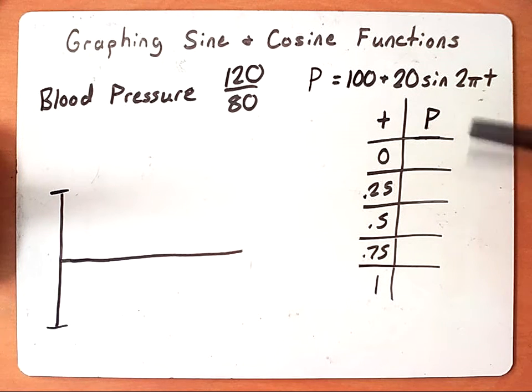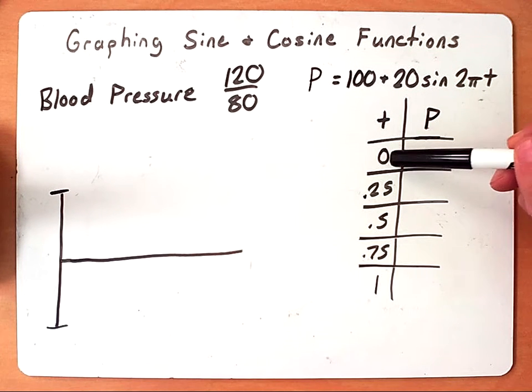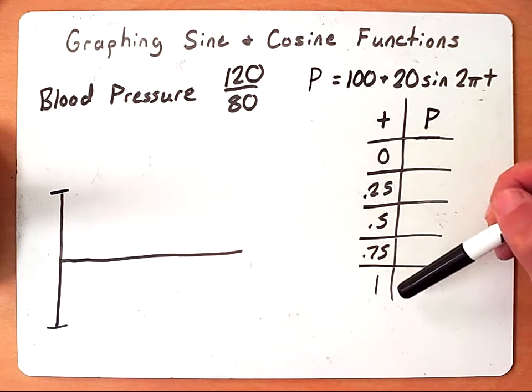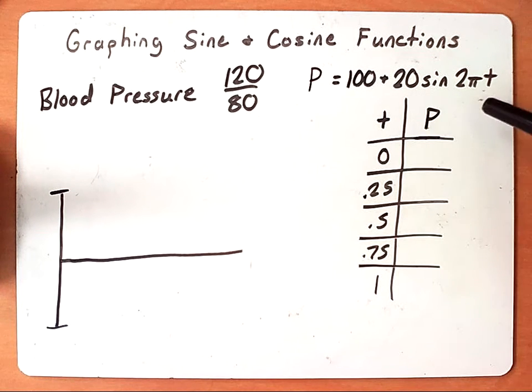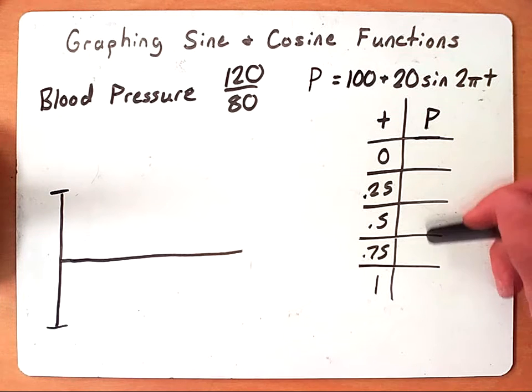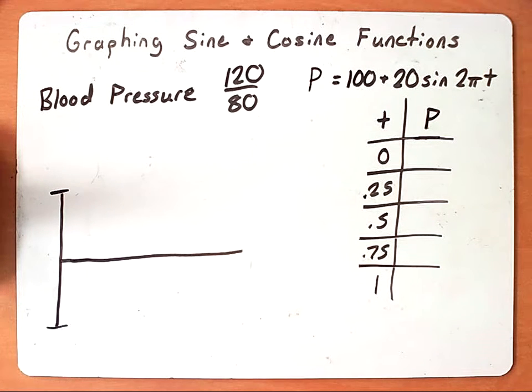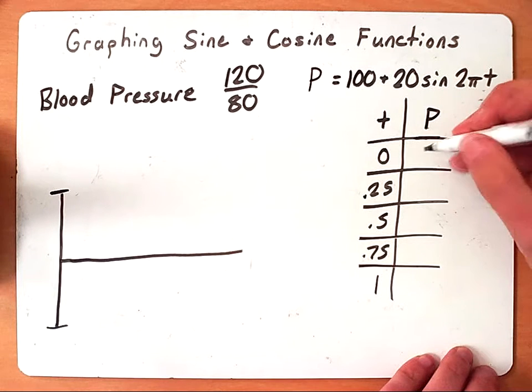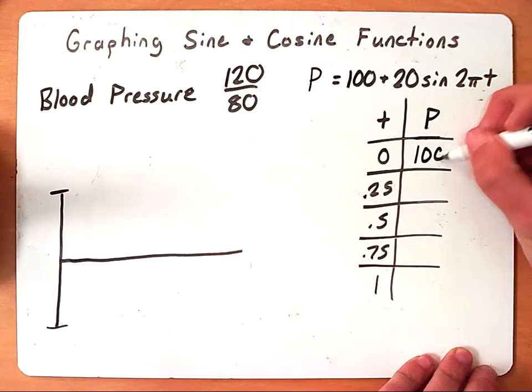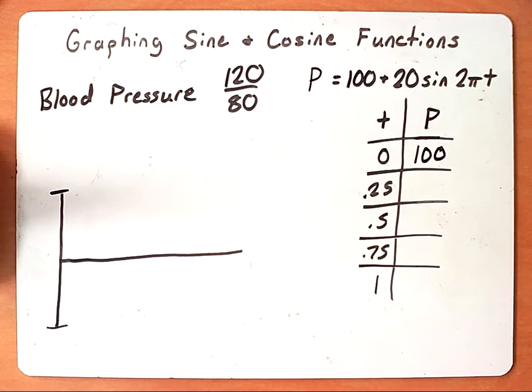So what we want to do is take these values that we have here, plug them into our equation, and find out what we would get for T at each one of these given intervals. So if we take zero and plug it into our equation, we're going to get a blood pressure of 100. So at the start of this, their blood pressure is sitting at 100.